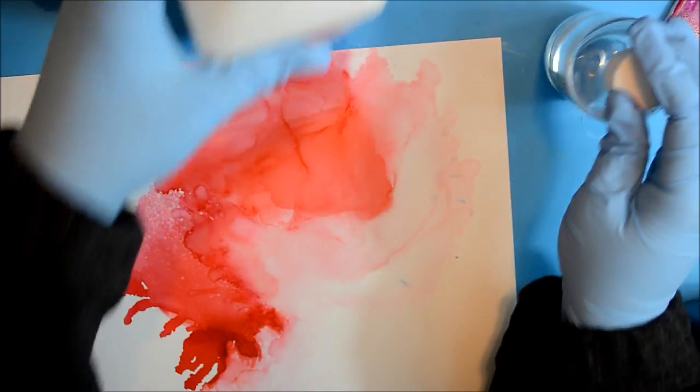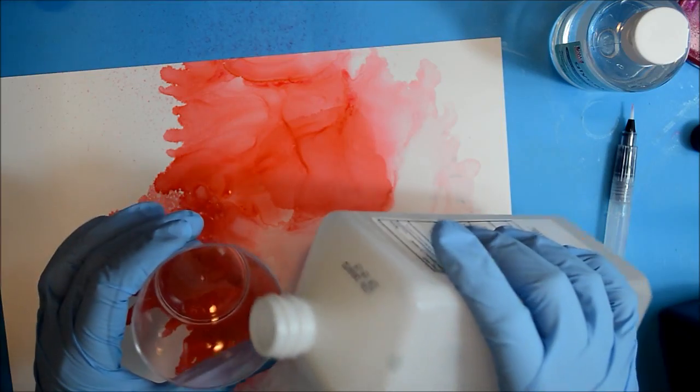So let's go ahead and try mixing our own blending solution. So I'm going to pour in maybe about a quarter cup of 91% alcohol.